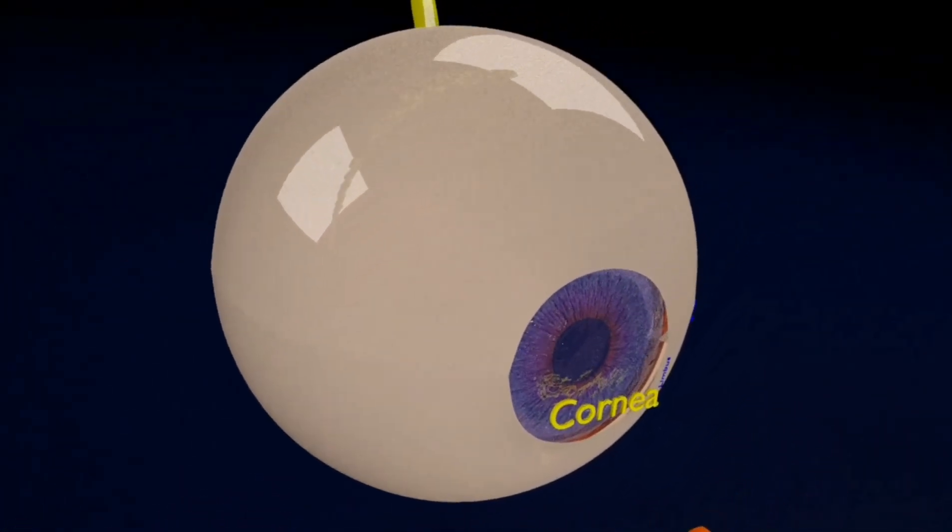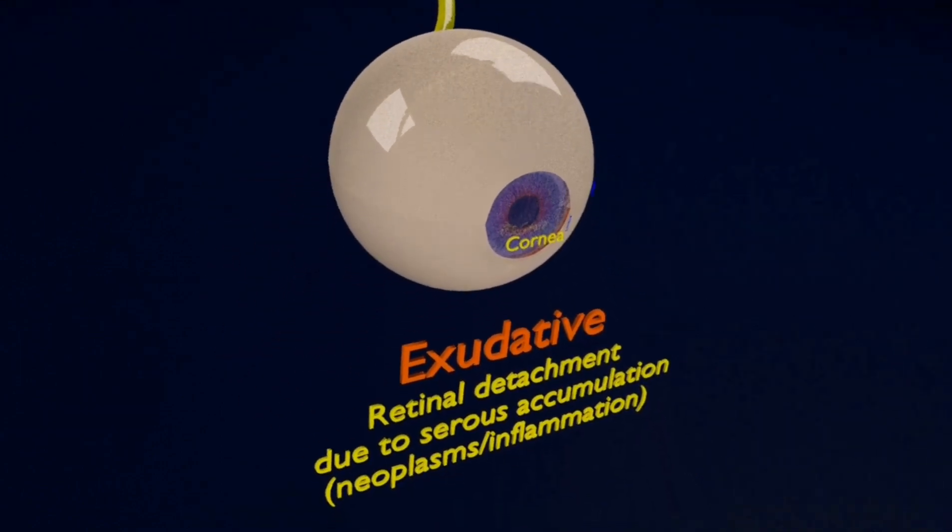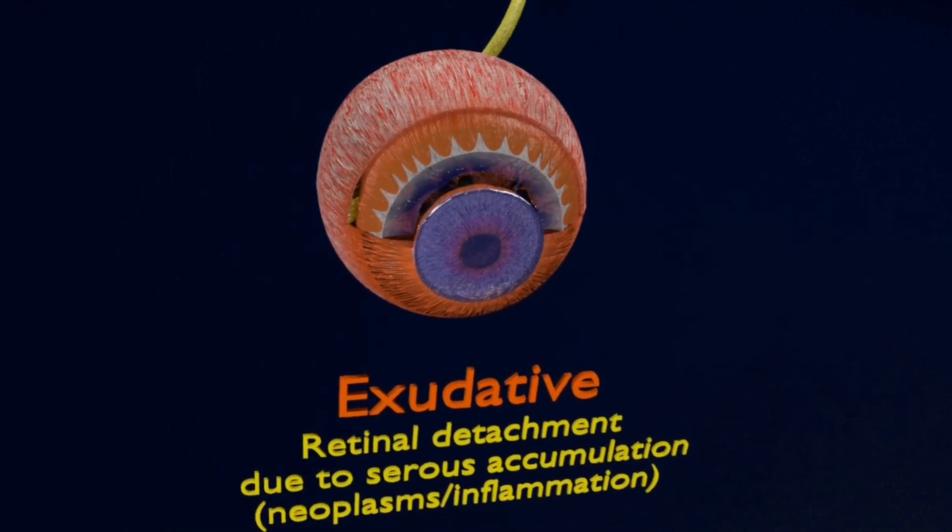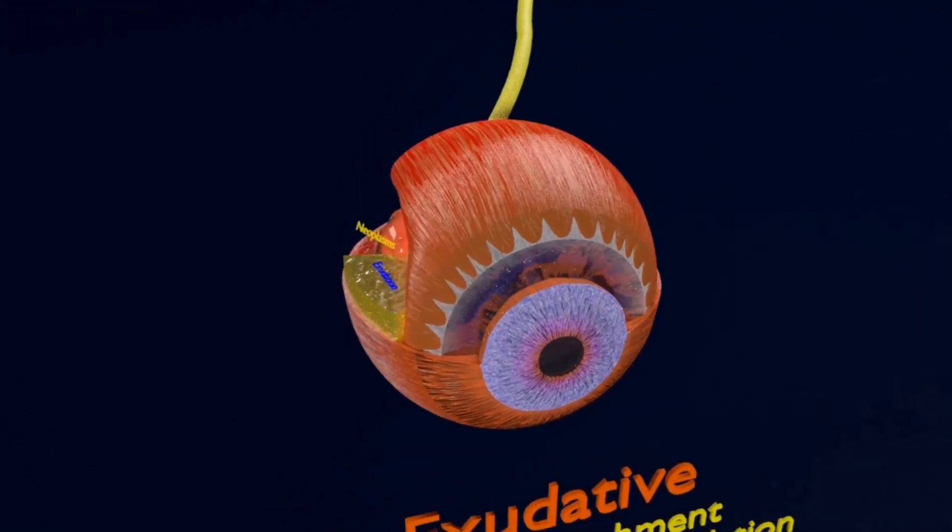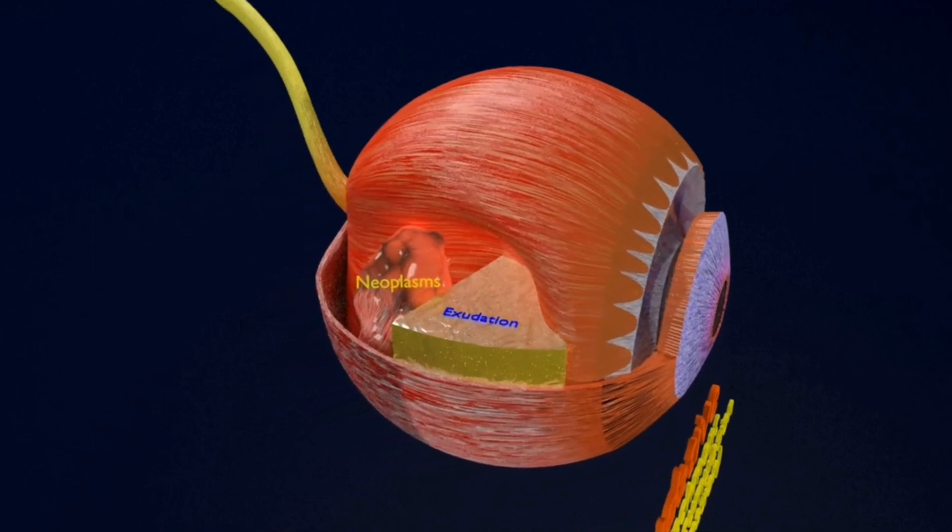Exudative retinal detachment. Exudative retinal detachment happens when fluid builds up behind your retina, but there aren't any tears or breaks in your retina. If enough fluid gets trapped behind your retina, it can push your retina away from the back of your eye and cause it to detach.